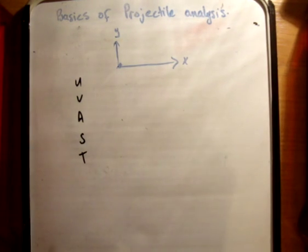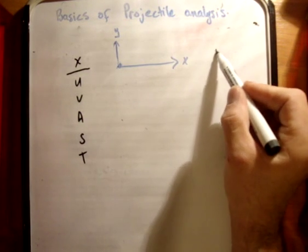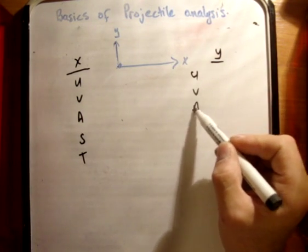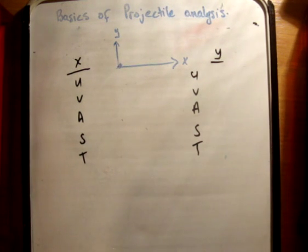So, now, the thing is, this time we have two dimensions. We have the x-dimension and the y-dimension. So, in order to be able to work out everything to do with these, we need to know, we need to do a UVAST for both.